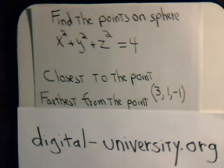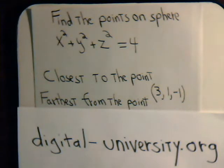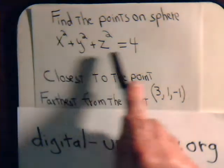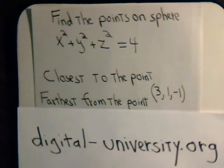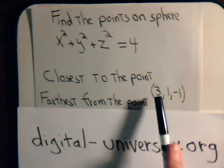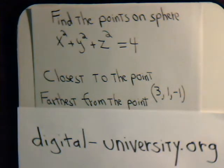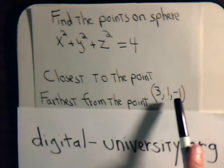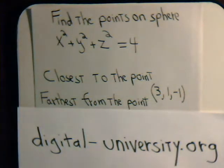Here is another optimization problem that we're going to solve using Lagrange multipliers. We have a sphere from this equation and we want to know what points on the sphere would be closest to the point (3, 1, -1), and what point on the sphere would be furthest away from this point (3, 1, -1).